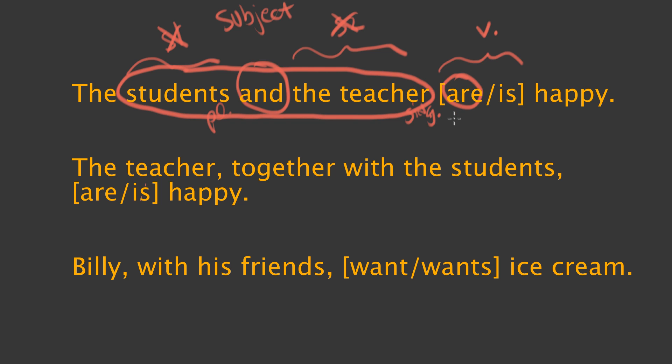We're also fortunate that when you use the word 'and' to create a compound subject, that subject will always be plural. So this is a plural subject, and we need a plural verb — which will be 'are.' 'The students and the teacher are happy' is the correct sentence. Remember: 'and' is the only word that creates a compound subject, and the compound subject is always plural.